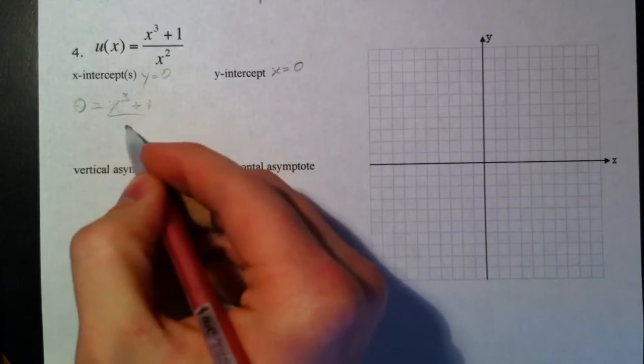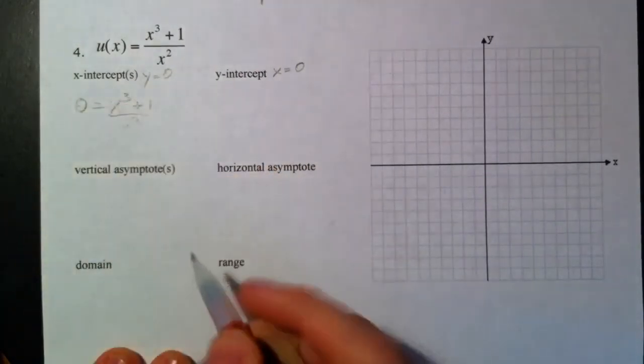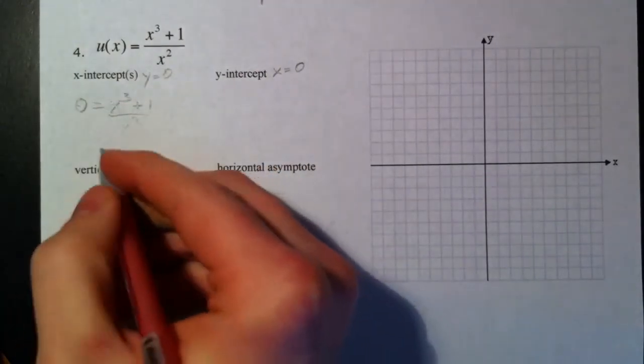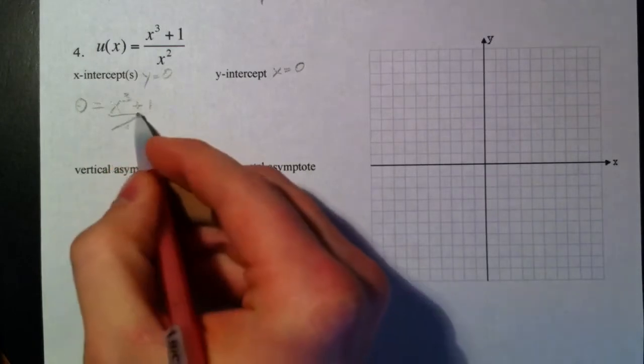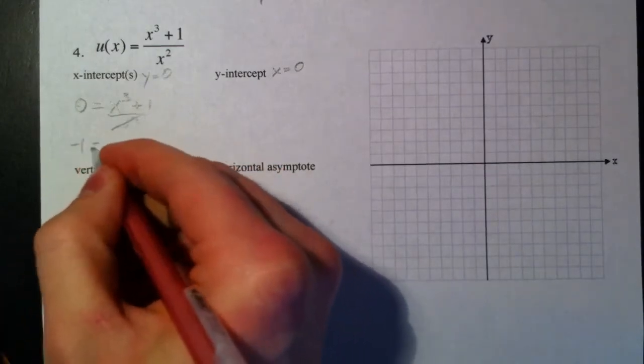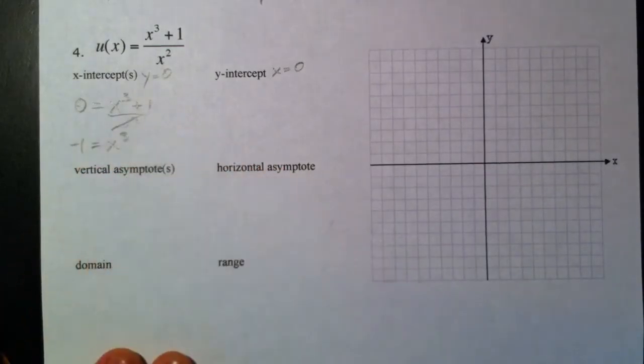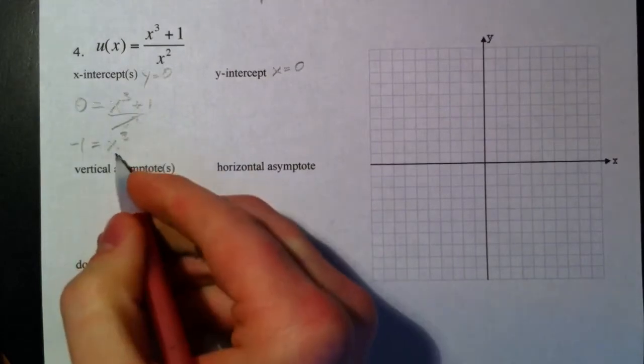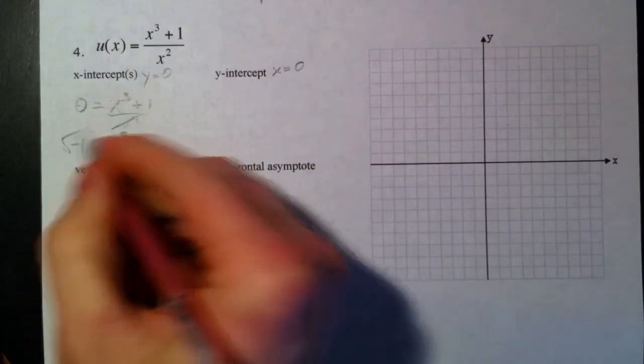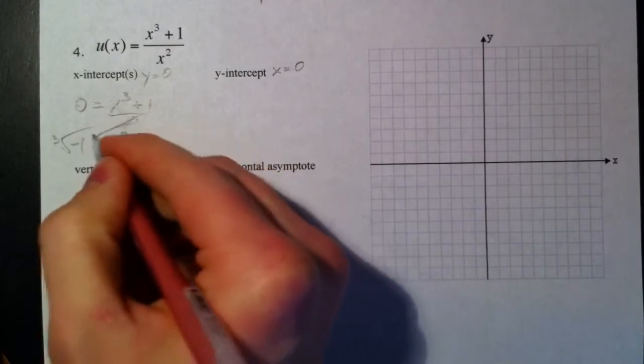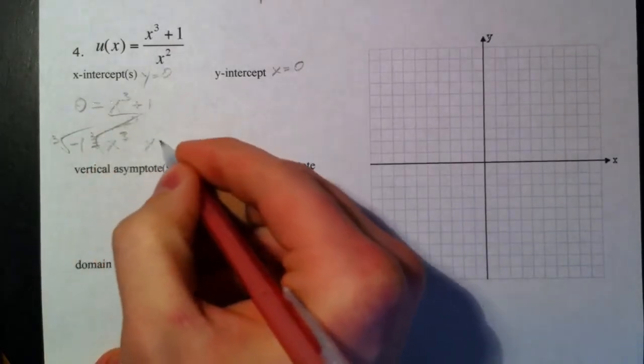No harm done if you put the denominator there and multiply, because it always cancels out. Subtract the 1, you get -1 equals x³. To undo an x³, you need a cube root. Cube root of -1 is -1 because -1 times -1 times -1.